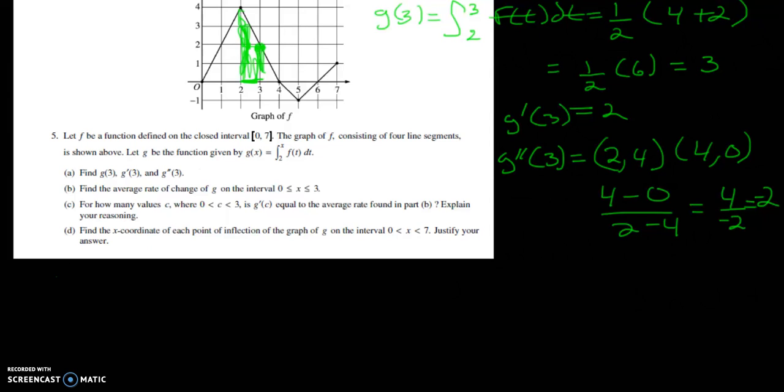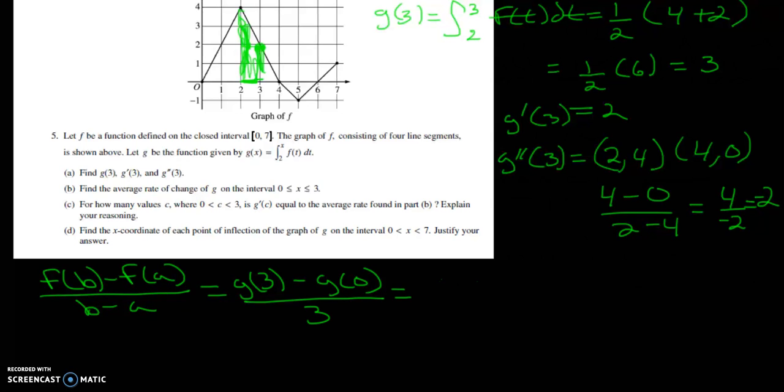So in this case you're going to do since it's at 3 to 0, you're going to do f of b minus f of a over b minus a which equals 3 minus 0 or g of 3 in this case minus g of 0 over 3. That's how you're going to find your average which equals the integral but you have to have the 1 third.